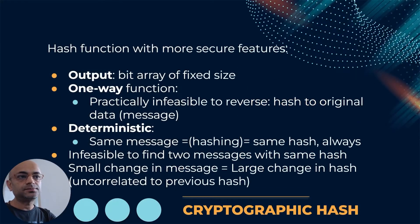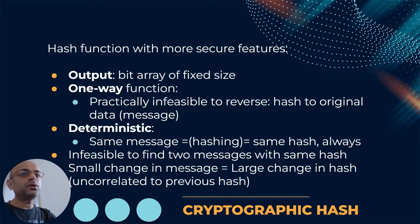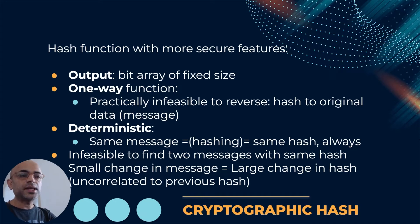A cryptographic hash is a hash function with a few more secure features. The output is a fixed-size bit array. The hash function should be a one-way function, meaning that when you create a hash from an input message, it should be practically infeasible to reverse the operation — given the hash, it should be infeasible to retrieve the original message.